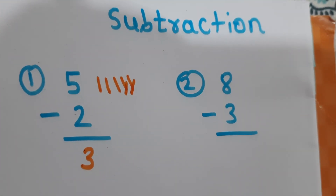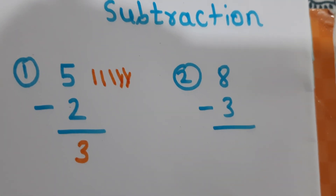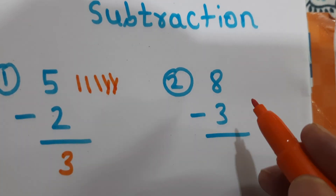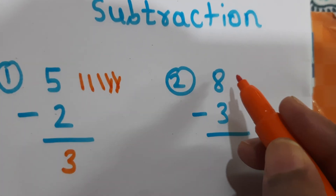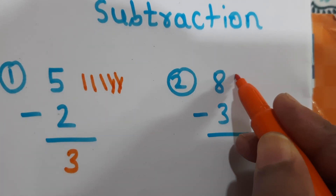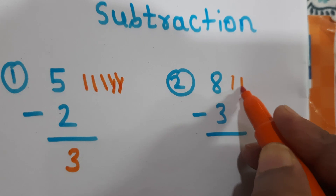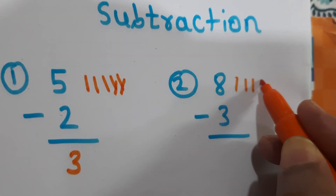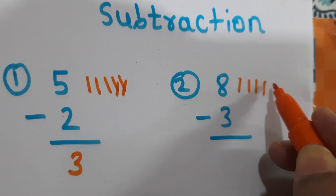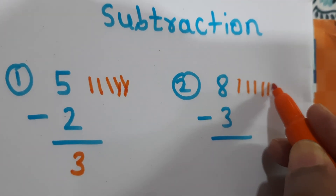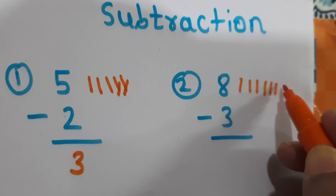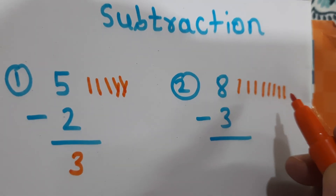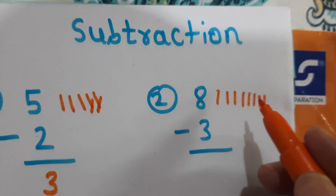Next example: 8 minus 3. We draw 8 lines: 1, 2, 3, 4, 5, 6, 7, 8.